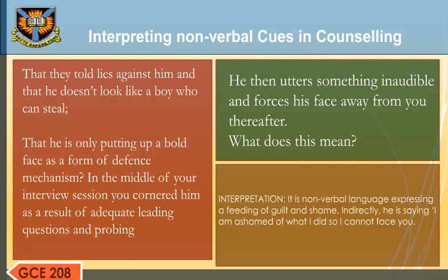In the middle of the interview session, he is cornered as a result of probing questions. He then utters something in a low voice and turns his face away from the counselor thereafter. Interpretation: It is non-verbal language expressing a feeling of guilt and shame. Indirectly, he is saying, 'I am ashamed of what I did, so I cannot face you.'